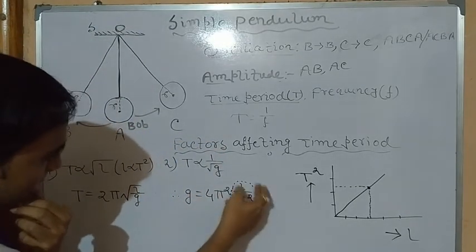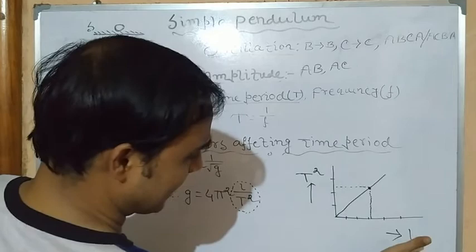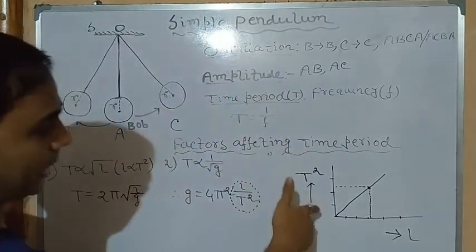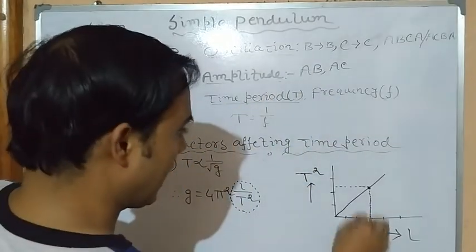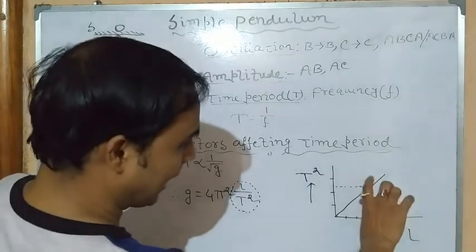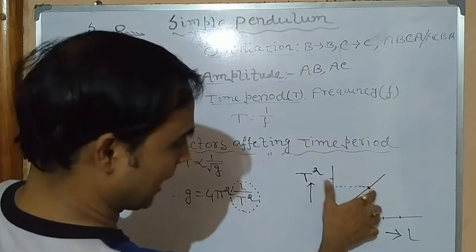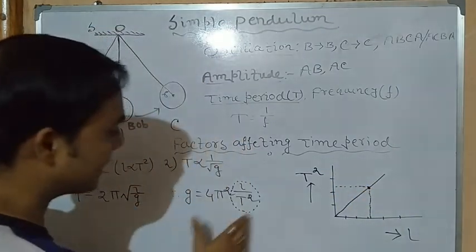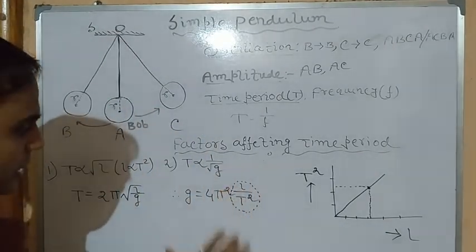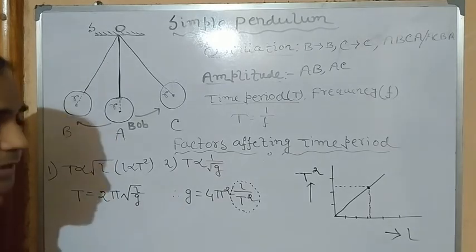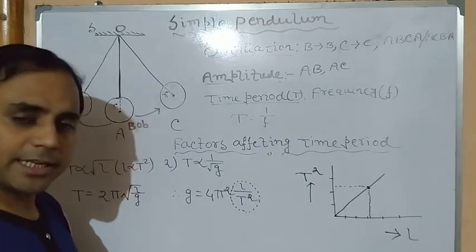From g = 4π²L/T², if we plot length L along the x-axis and T² along the y-axis, we get a straight line passing through the origin. Taking any point on this line and drawing perpendiculars to both axes, we find L/T² is a constant. Multiplying by 4π², we get the value of g = 9.8 m/s².